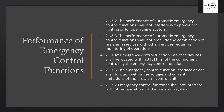Emergency control function interface devices shall be located within three feet of the component controlling the emergency control function. So in an elevator machine room, your relay shutting down the elevator needs to be within three feet of the controller. For air handler units, if there's a VFD in a mechanical room and we put the duct detector up on the ductwork, we need to remote-mount that relay within three feet of that VFD controller. The emergency control function interface device shall also function within the voltage and current limitations of the fire alarm control unit.